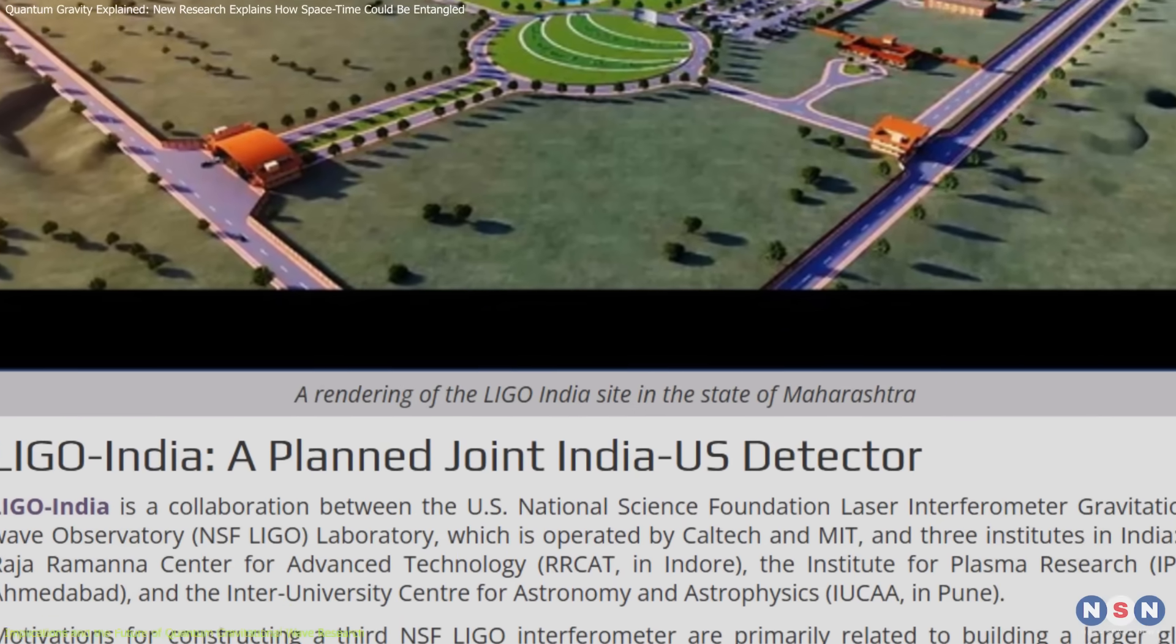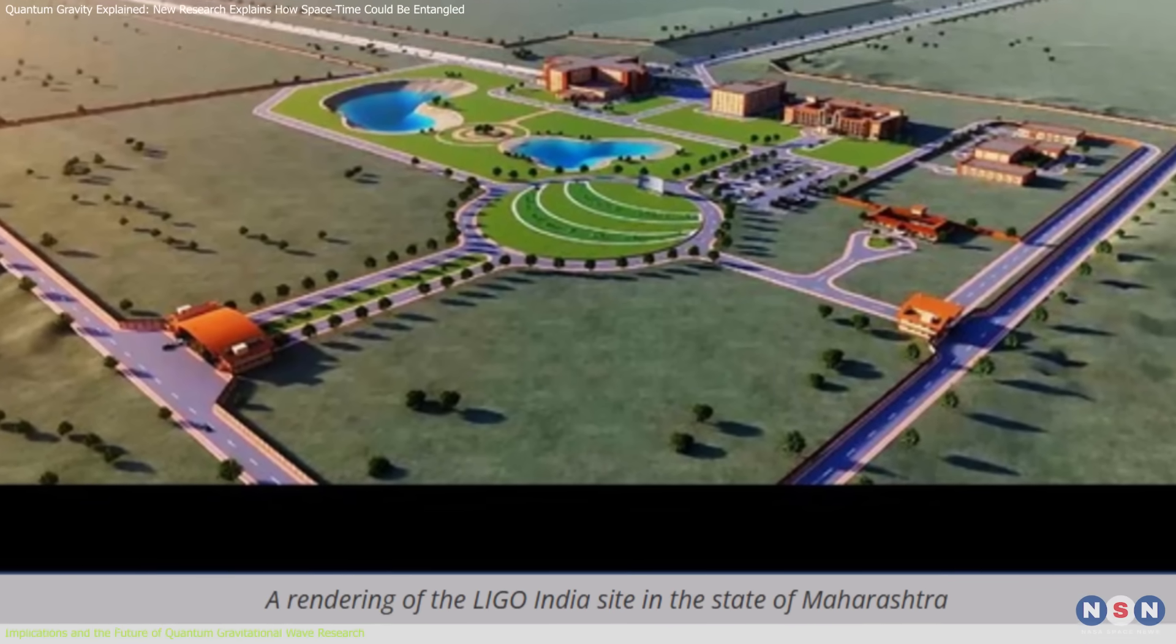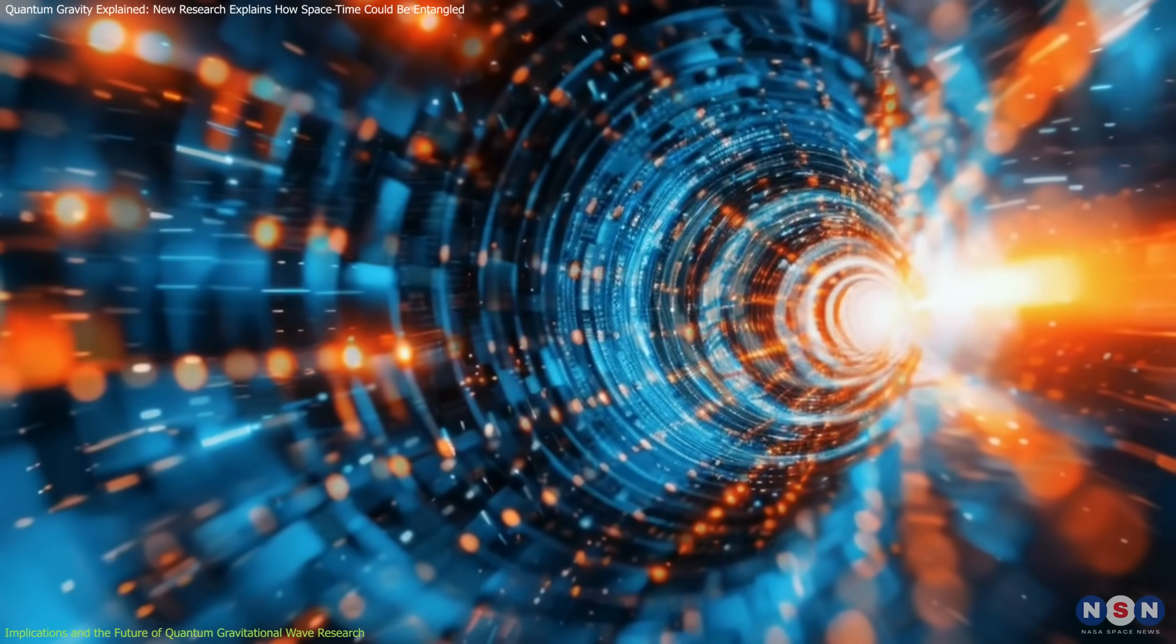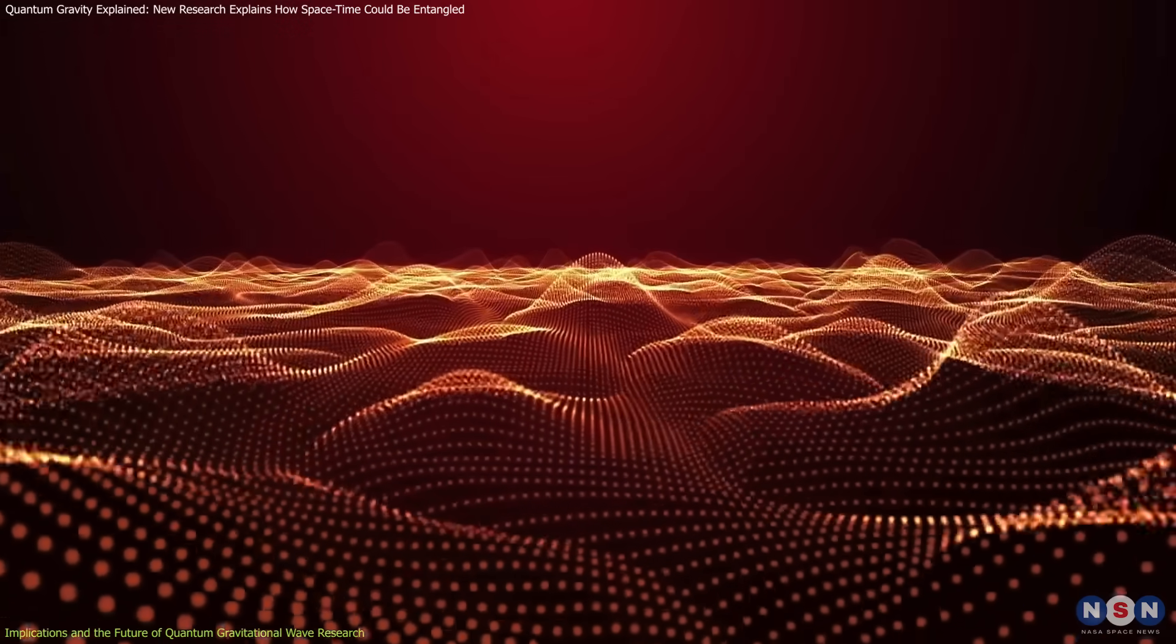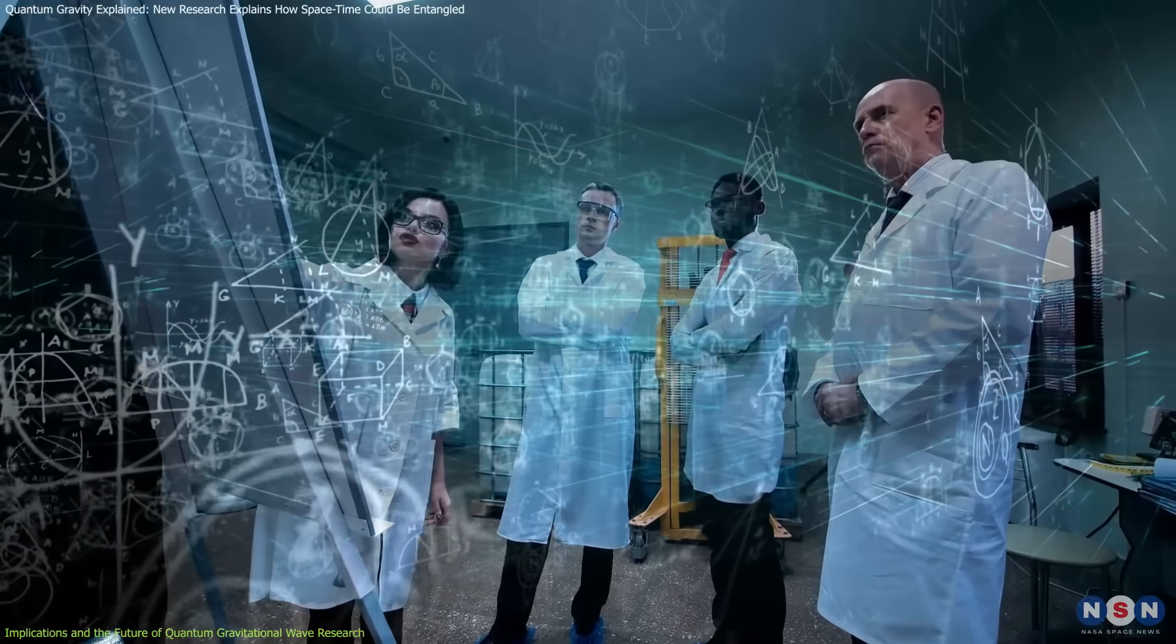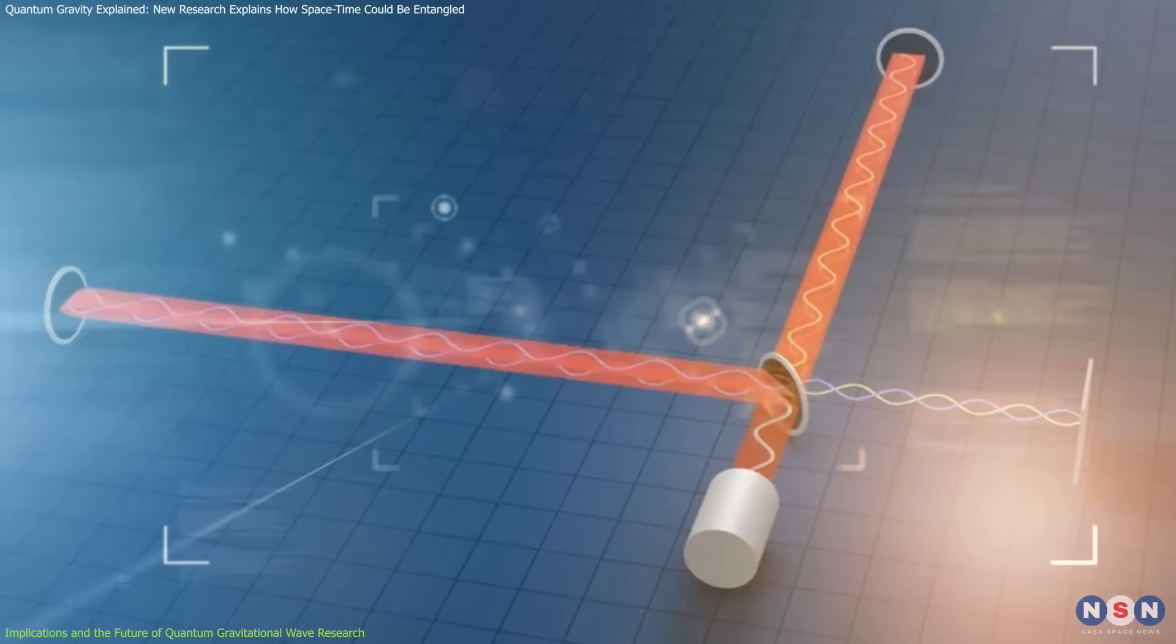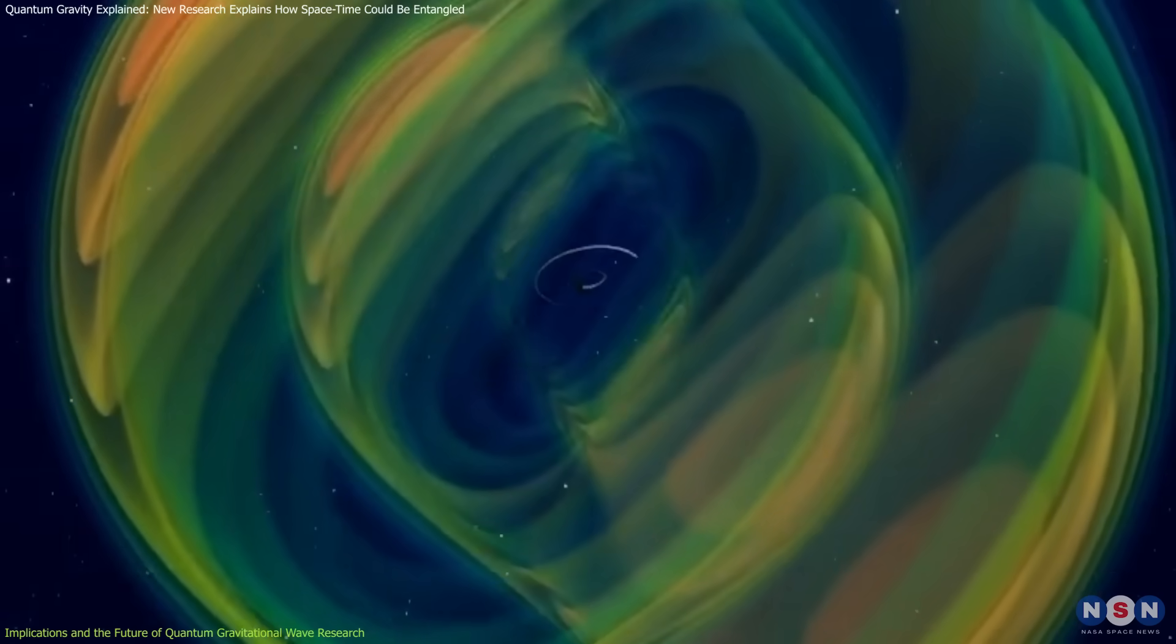Future observatories, like the planned LIGO India, set to become operational by 2030, may possess the enhanced sensitivity required to detect these subtle quantum effects. These facilities could employ cutting-edge technologies such as quantum-enhanced measurement techniques to observe the minute disturbances caused by quantum gravitational waves. Additionally, collaborations between theoretical physicists and experimentalists will be crucial in designing detectors capable of isolating and identifying the unique signatures of quantum entanglement induced by gravitational phenomena.